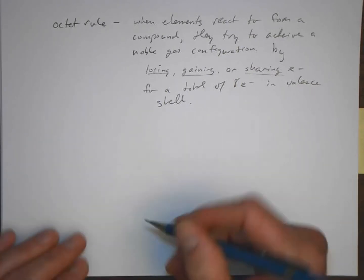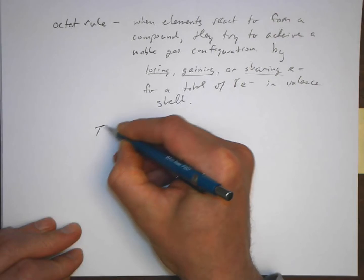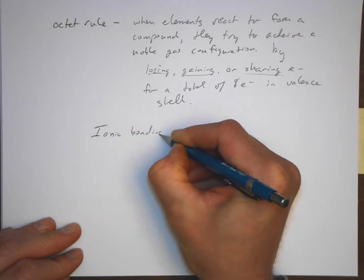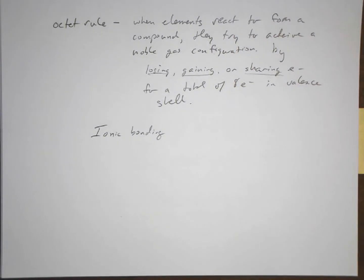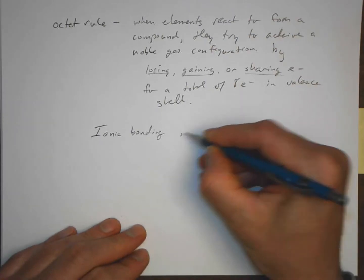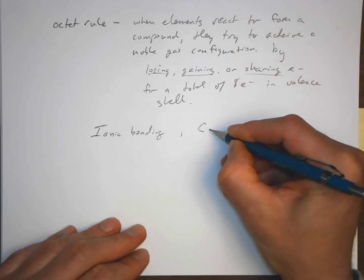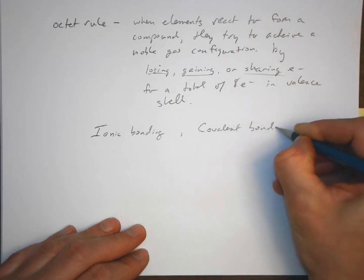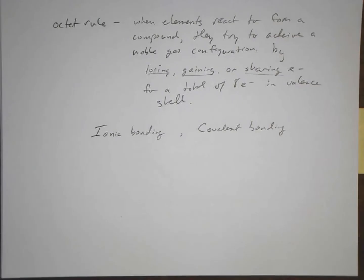We're going to look at two different types of bonding that happen to make it so that elements, when they form compounds, can satisfy the octet rule. One of them is called ionic bonding. We'll look at that in the next two videos. And the other type of bonding is called covalent bonding. We'll look at that in the latter part of this chapter.